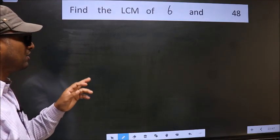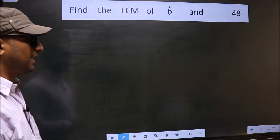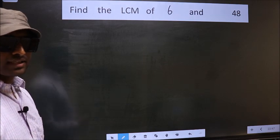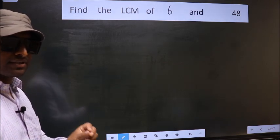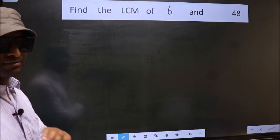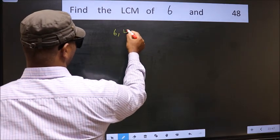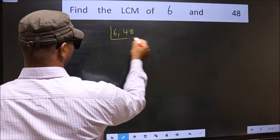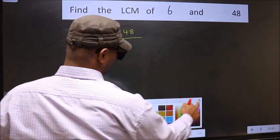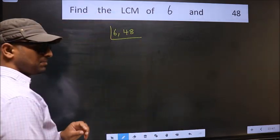Find the LCM of 6 and 48. To find the LCM, first we should frame it in this way: 6, 48. This is your step 1.